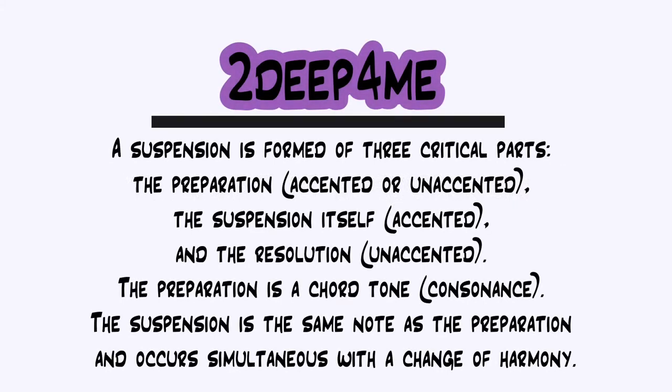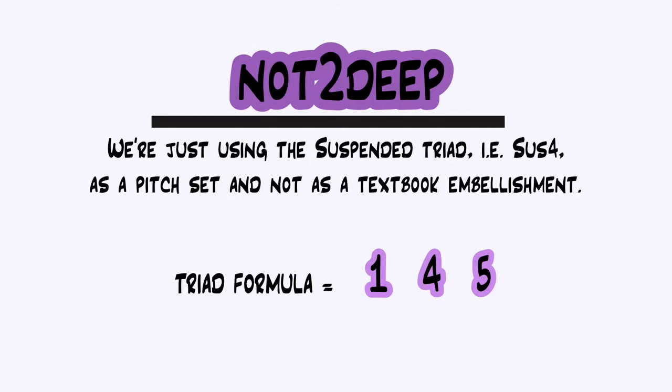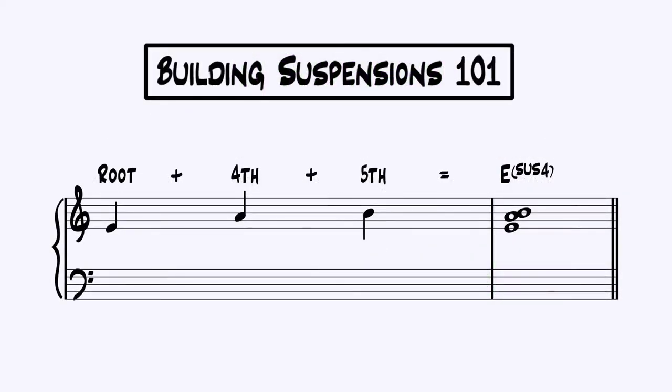I'm not going to go into the deep history of suspensions, and there are multiple ways to define a suspension, but what I am referring to specifically is the Sus 4 triad. What this chord name is stating is that the triad is built with the 4th rather than the 3rd, as in it contains a root, perfect 4th, and a perfect 5th.